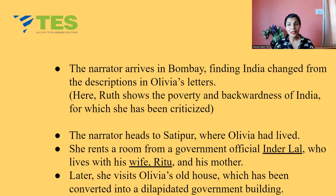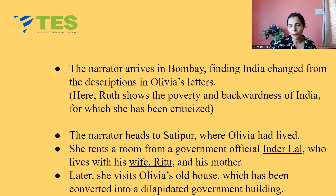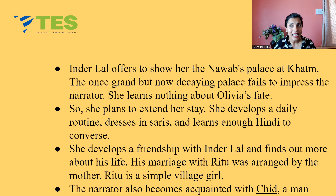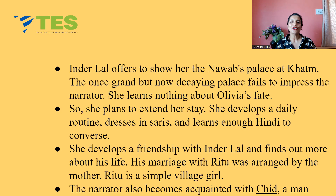Inderlal lives with his wife Ritu and his mother. Later, the narrator visits Olivia's old house, which has now been converted into a dilapidated government building. She's trying to learn about Olivia's past but hasn't found much yet. Inderlal offers to show her the Nawab's palace at Khatam — the once grand but now decaying palace — which fails to impress the narrator, and she learns nothing about Olivia's fate. She plans to extend her stay in India.